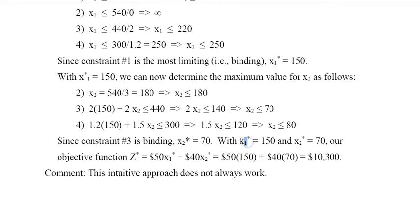Now with x1 equals 150 and x2 equal 70, my objective function would be 50x1 star plus 40x2 star. I substitute x1 star 150, x2 star 70, I got $10,300, which is nice.